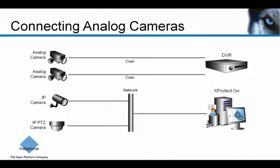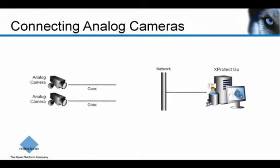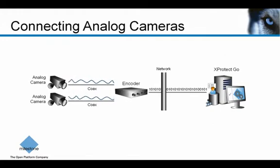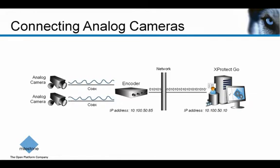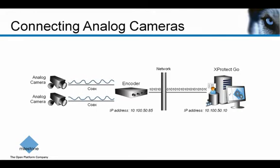Before you can start connecting the analog cameras to XProtect Go, you need to make sure that various network components are connected correctly on the network level. IP addresses are used to manage the communication in the data network and the communication between the PC and the encoder. Each device connected to the network has its own unique IP address. The specific network addresses will of course depend on the actual network implementation and will therefore vary from network to network.